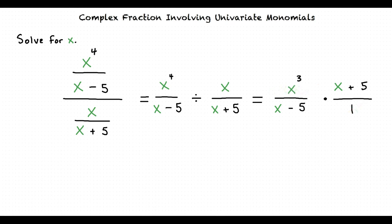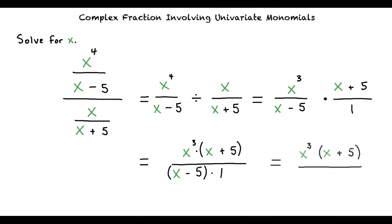Our final step is to multiply the two fractions. We multiply the numerators and denominators together. x cubed times x plus 5 can be left as x cubed times x plus 5, and x minus 5 times 1 equals x minus 5. So our final answer is x cubed times x plus 5 over x minus 5.